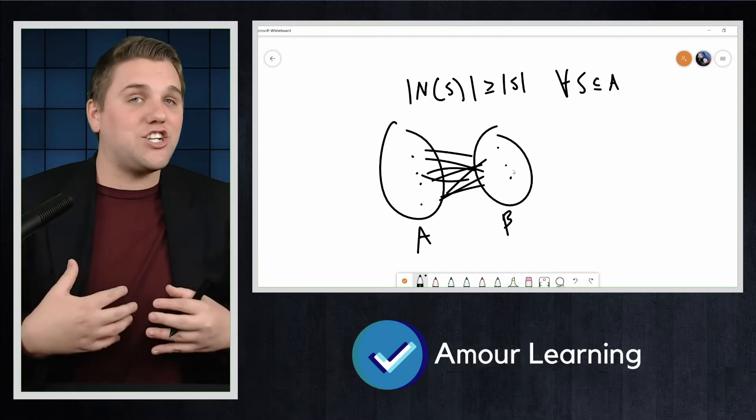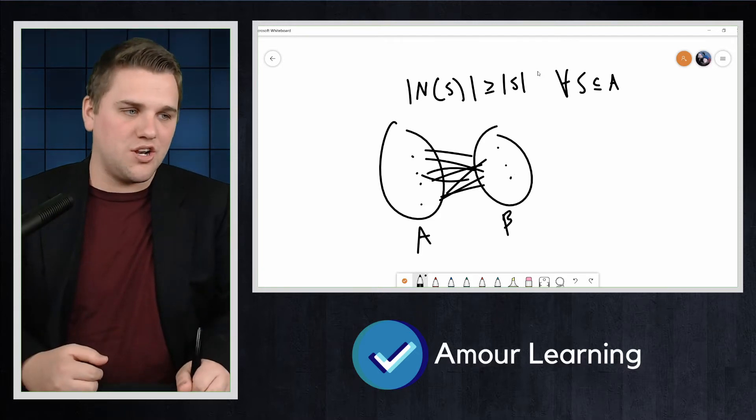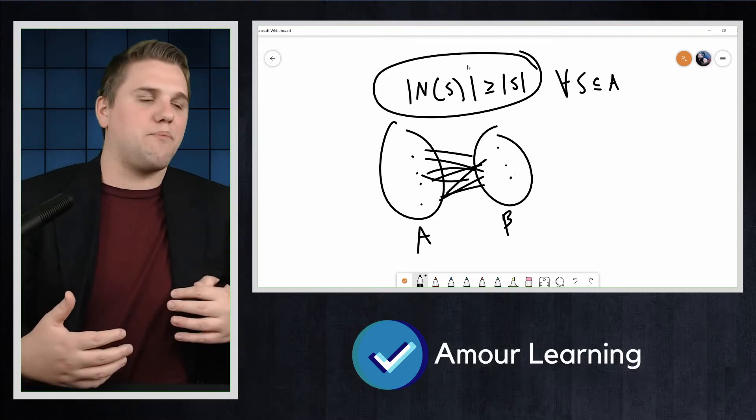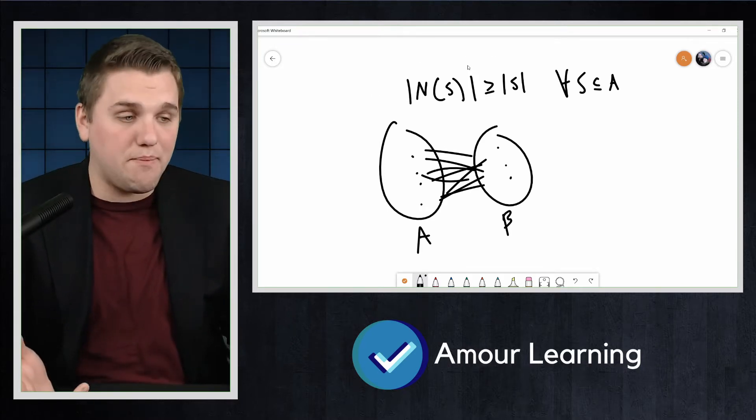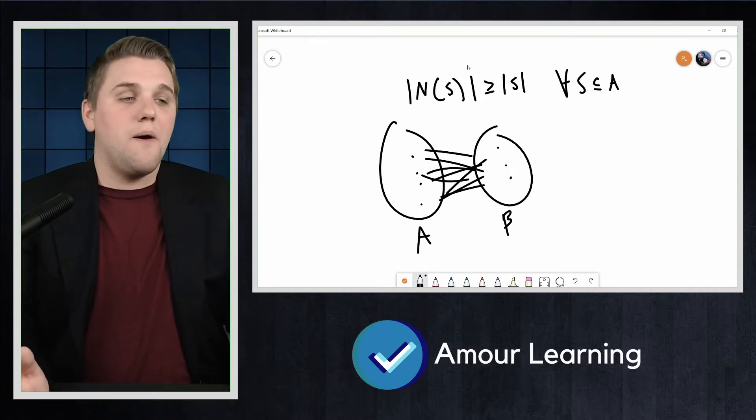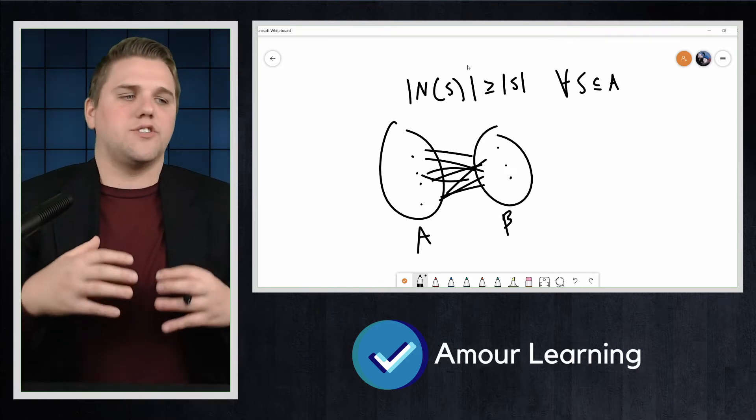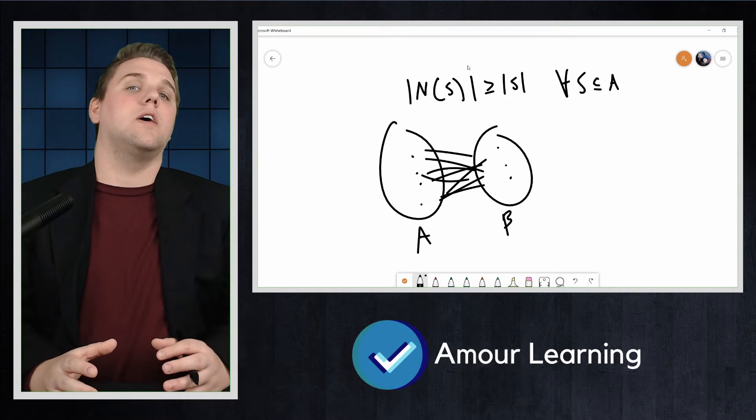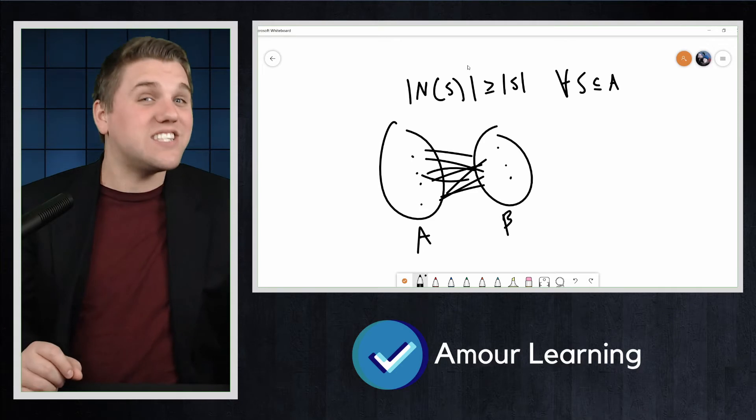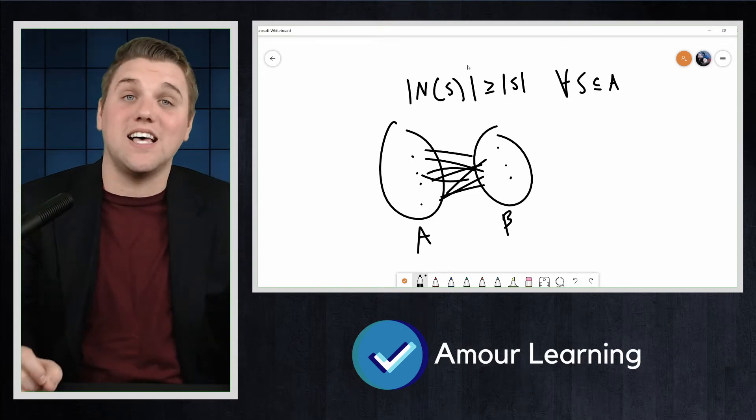Obviously if there's a matching you have to have this condition met, and we used the example with students in history class picking topics for their project. But what about the converse? If we know that's true, does that necessarily mean that there is a matching? Surprisingly, the answer is yes.